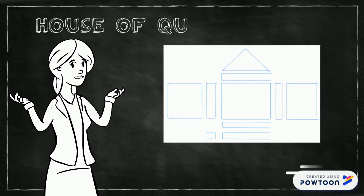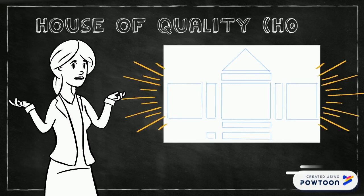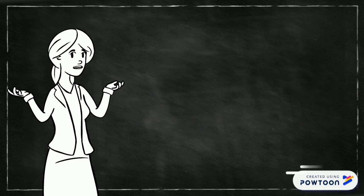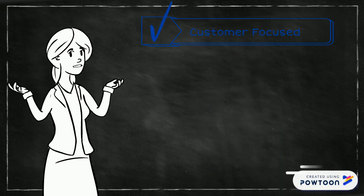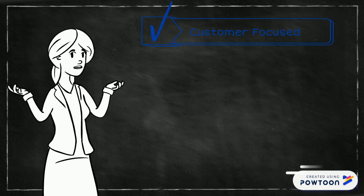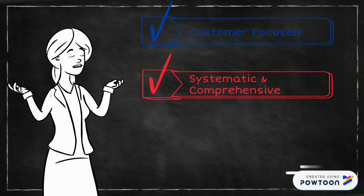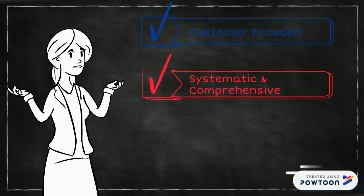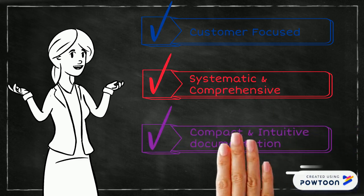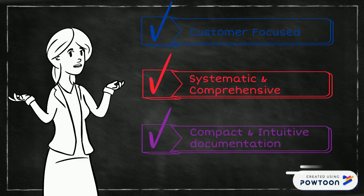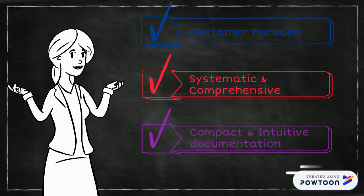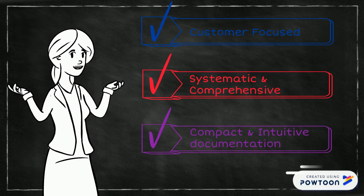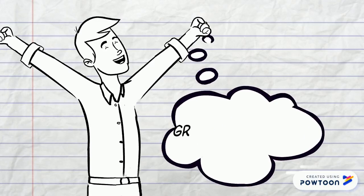The house of quality is a tool that can help your team. It can guide you through a customer-focused design process. It can help you to be systematic and comprehensive. HOQ can also provide a compact and intuitive documentation platform so you and your team can always be on the same page and retrace your important design decisions. So let's have a tour.